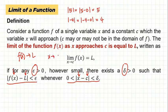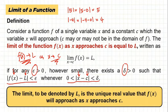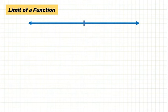So what the limit really means is the value that f(x) will approach as x approaches c. The limit, denoted by L, is the unique real value that f(x) will approach as x approaches c. So what we look at in a limit is the value that f(x) is heading toward as x approaches c.